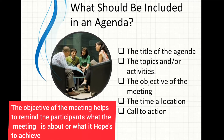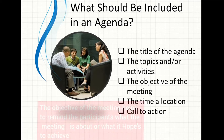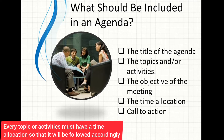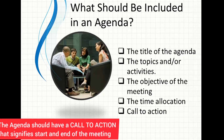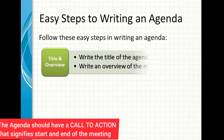The objective of the meeting helps to remind the participants about what the meeting is about or what it hopes to achieve. Time allocation — every topic or activity must have a time allocation so that it will be followed accordingly. Call to action — the agenda should have a call to action that simplifies the start and end of the meeting.